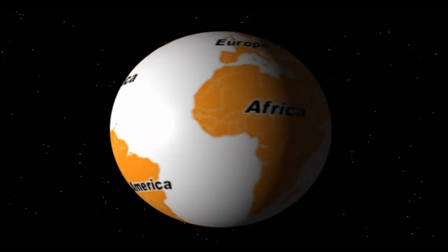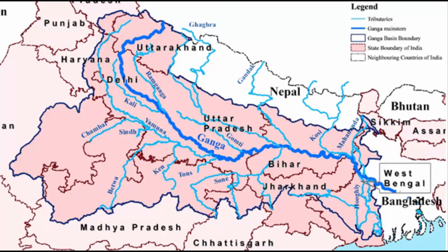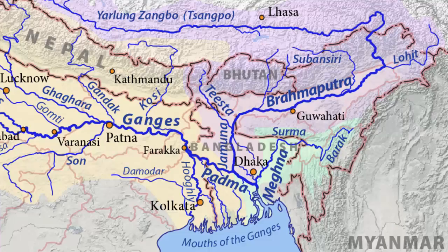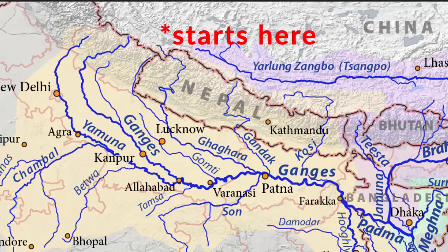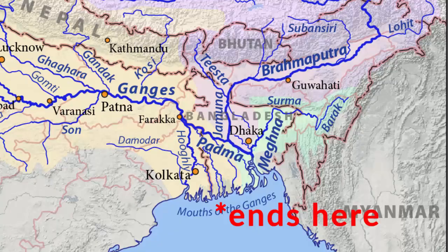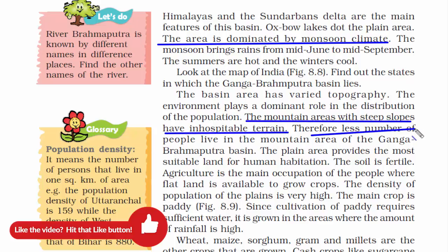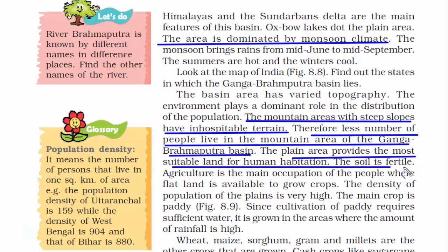Now let's come to India and read about the Ganga Brahmaputra basin. The tributaries of rivers Ganga and Brahmaputra together form this basin. Both Ganga and Brahmaputra originate from the Himalayas and cover a long journey before draining into the Bay of Bengal near the Sundarban Delta. The region is dominated by monsoon climate. The Himalayan mountain areas have steep slopes and rough terrain, so fewer people stay there. However, once the two rivers reach the plain areas, the fertile soil they bring makes these plains the most suitable land for human settlement.